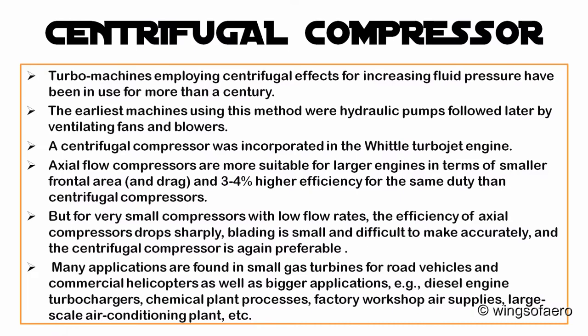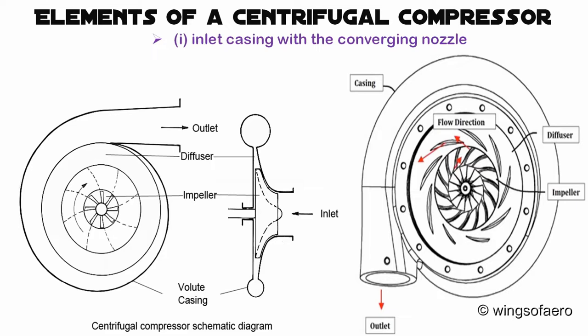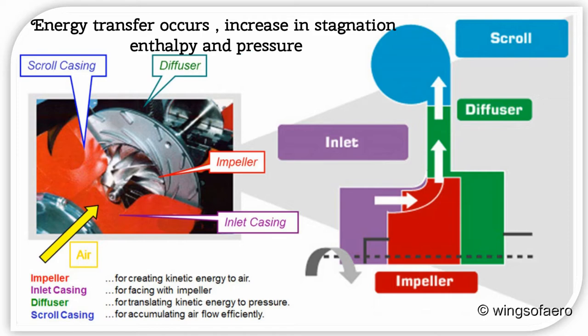The compressor process is carried out in the centrifugal compressor, which comprises mainly four elements. First, the inlet casing with converging nozzle, whose function is to accelerate the fluid to the impeller inlet. Next comes the impeller, in which the energy transfer takes place, resulting in a rise of fluid kinetic energy and static pressure.